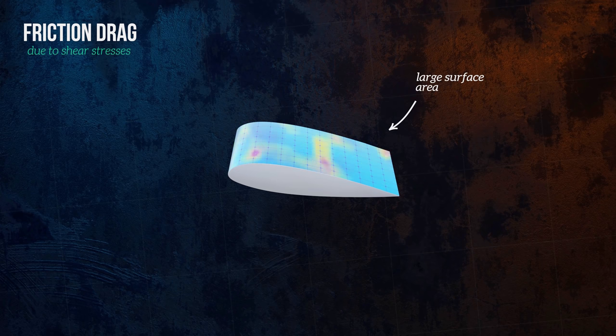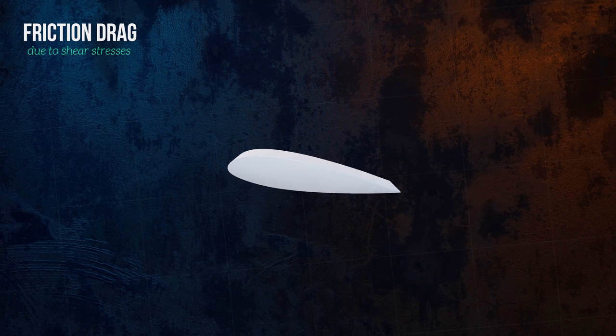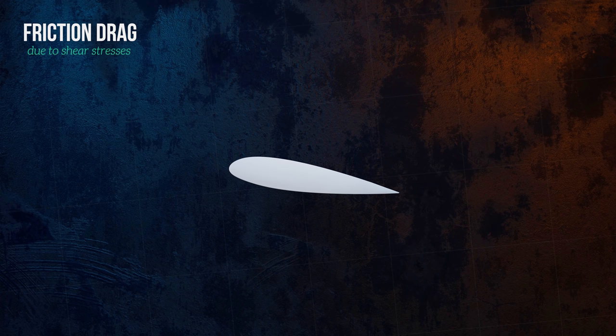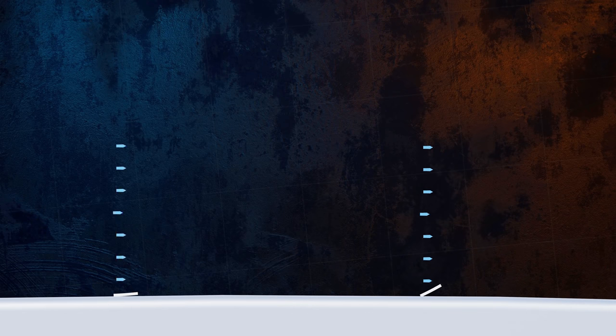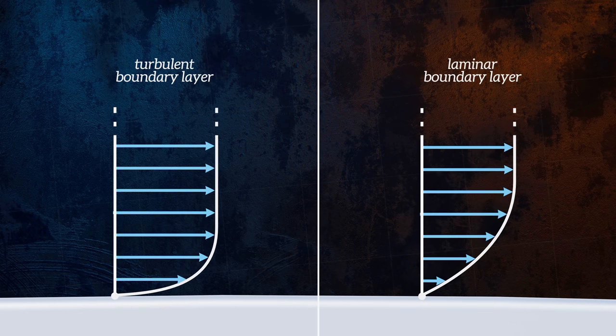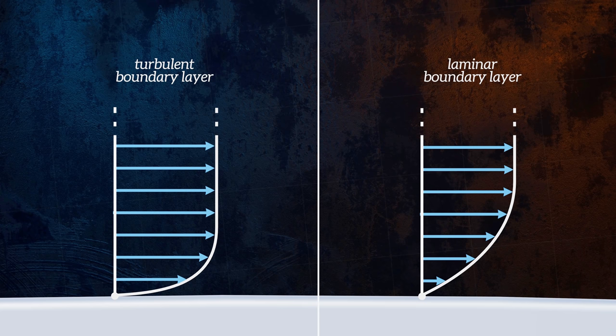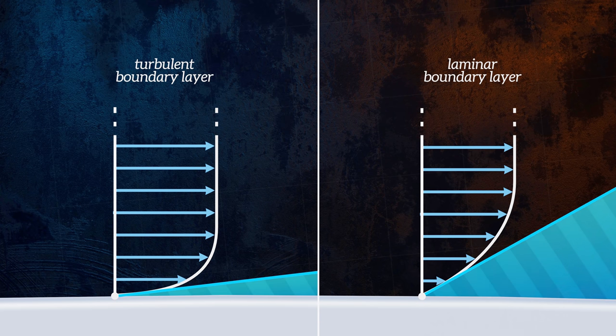We saw earlier that turbulence delays flow separation, which reduces the pressure drag. But for friction drag, it has the opposite effect. Laminar and turbulent boundary layers have very different velocity profiles. The velocity gradient at a wall is steeper in turbulent boundary layers than in laminar ones, and so turbulence produces larger shear stresses.